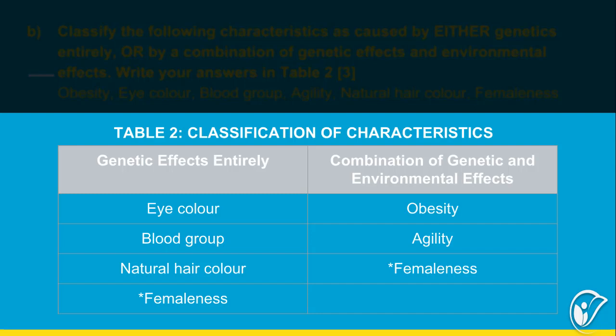If femaleness is in a biological sense, then it is exclusively genetic. If it's femaleness from a cultural sense in terms of gender, it's both genetic and environmental. Obesity is of course due to both genes and environment — if your family tends to be overweight, you will also have a tendency to be overweight, but you can counteract that by changing your diet and staying active. Agility is also partially genetic; certain people have very flexible joints, but by doing stretches and exercises regularly you can increase your agility over time.